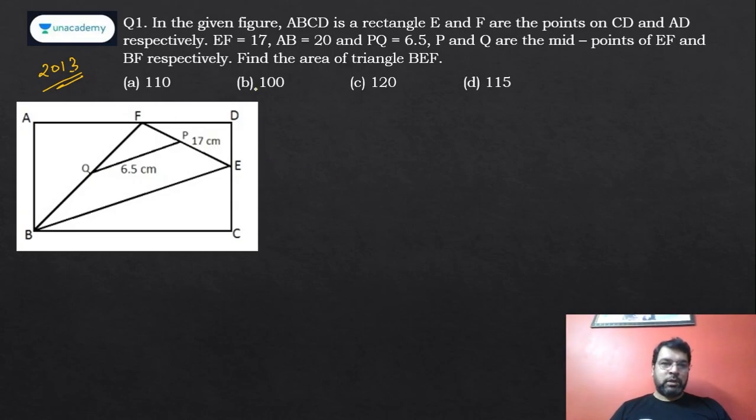Let's start then. In this question I will give you proper shortcut, I mean a logical shortcut, not taking random values. Everything is given: EF is 17, it's a rectangle, PQ is 6.5, P and Q are the midpoints, AB is 20. If AB is 20, obviously DC will also be 20. Because P and Q are midpoints, we know midpoint theorem: in a triangle if midpoints of two sides are joined, then the line is parallel to the third side and half of it. So obviously PQ will be half of BF, so BF will be double of that, which is 13.